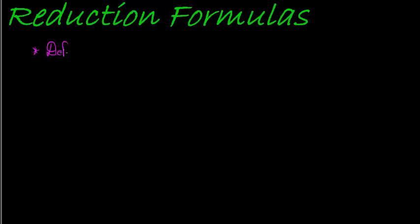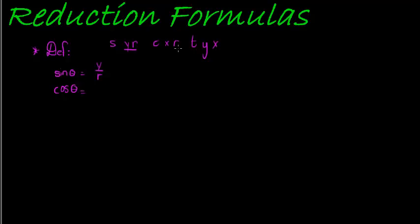First of all, the definitions of the ratios. The x, y, and r formulas are very important. We have that sine of an angle is equal to y over r, we have that cos of that angle is equal to x over r, and finally we have that tan of an angle is equal to y over x. If you know this, you are a third of the way to understanding reduction formulas.